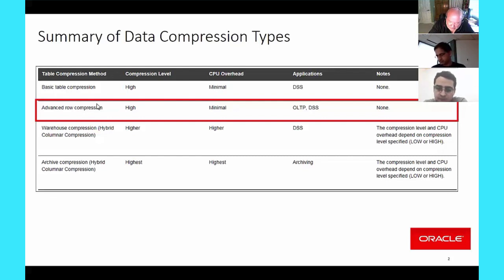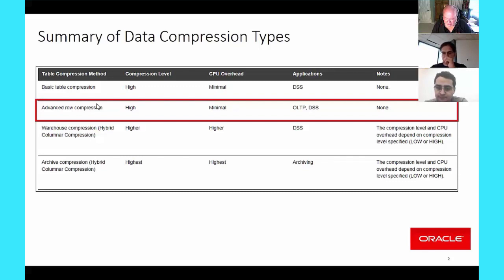The next question comes up quite a bit: what is the overhead associated in general with advanced row compression? Traditionally we've always said about 3% to 5% CPU is typically what we see in terms of overhead with advanced compression.